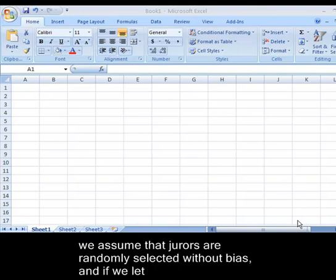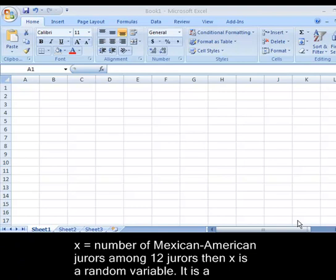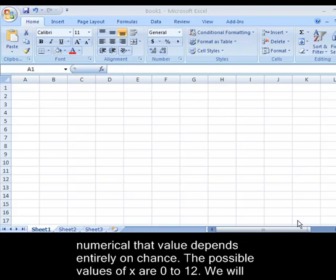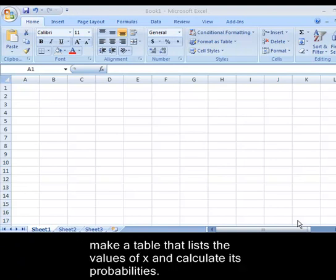If we assume that jurors are randomly selected without bias, and if we let x equal the number of Mexican-American jurors among twelve, then x is a random variable—a numerical value that depends entirely on chance. The possible values of x are zero to twelve. We will make a table that lists the values of x and calculate its probabilities.